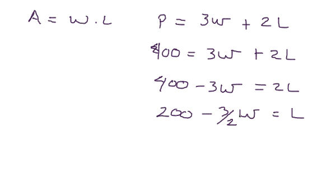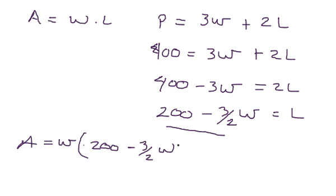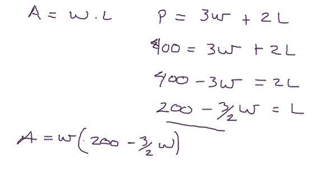There we go. So we got L in terms of W. So I'm going to now go ahead and write this out. Area is equal to, so we're substituting this L in right here. So let me just rewrite the W. L is equal to all of this stuff here. And this is going to be 200 minus 3/2 W. We want to put a parenthesis around that.